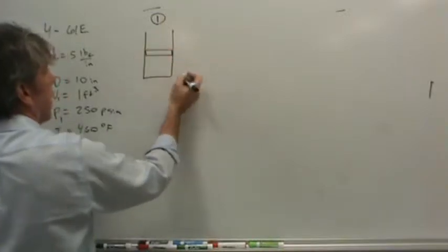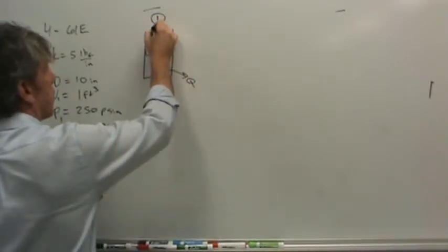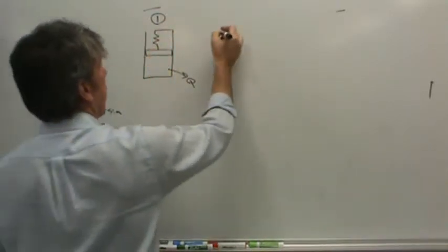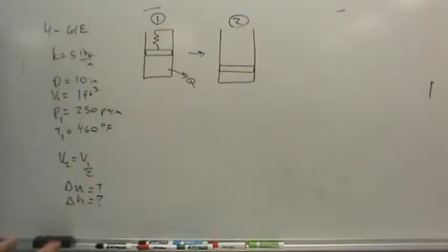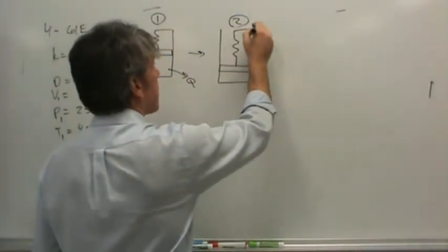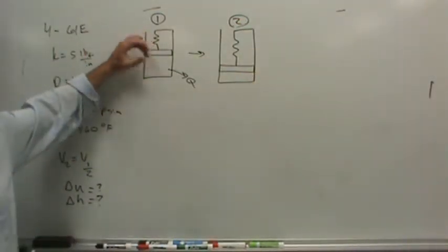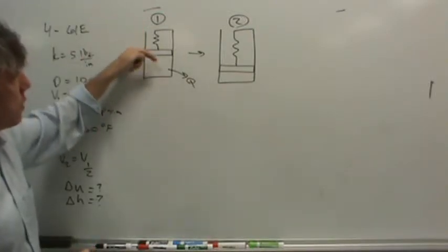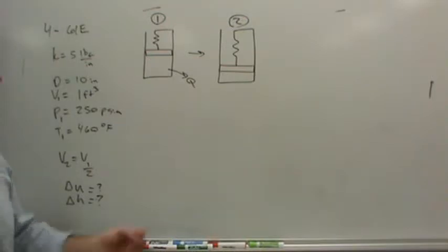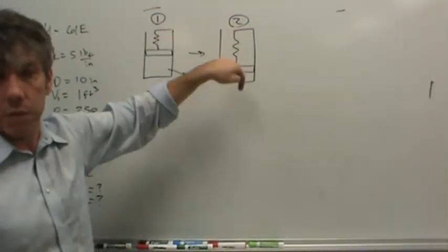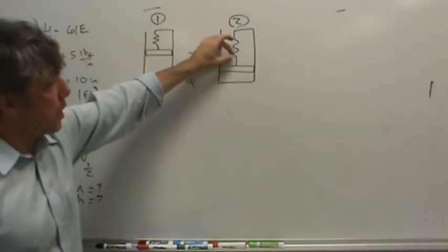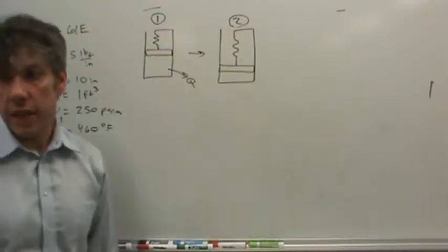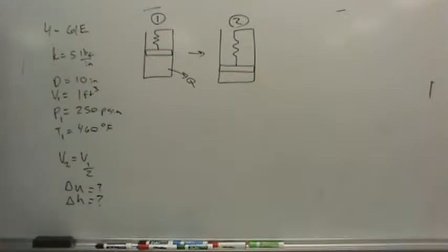Let me draw the system. If this is the piston and there's a spring up here, as the gas cools it's going to shrink, right? The volume in state two is half the volume in state one. Is the boundary work flowing into or out of the system? There's atmospheric boundary work - the atmosphere is winning, so work's flowing in. The spring's resisting that motion. If the spring is not stressed at this point, the spring's trying to pull it back. There's two parts to the boundary work we need to consider.